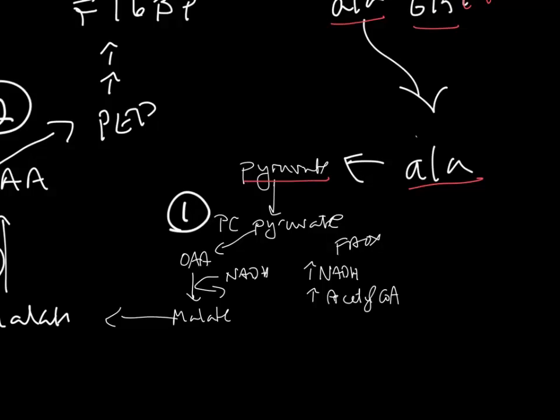Pyruvate enters into the mitochondria. So here, my pictorial representation, this box here is my mitochondria. And pyruvate goes from the cytosol into the mitochondria.